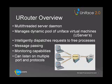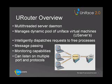The U-Router is the multi-threaded Uniface daemon that runs on the server and manages connections between the client and server-side virtual machines. The Uniface U-Router manages a dynamic pool of these virtual machines called Uniface U-Servers. It intelligently dispatches requests to any of the free processes. It also handles inter-process communication through message passing using Uniface statements such as post-message. It provides monitoring capability, allowing you to see the state of the processes and the number of requests handled.